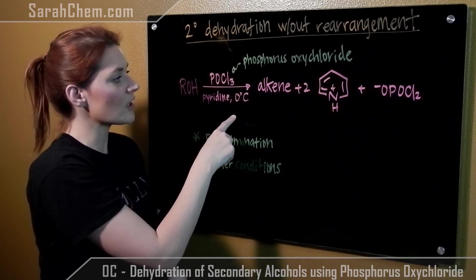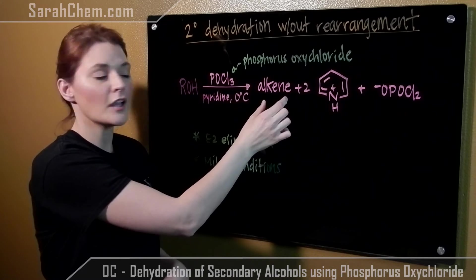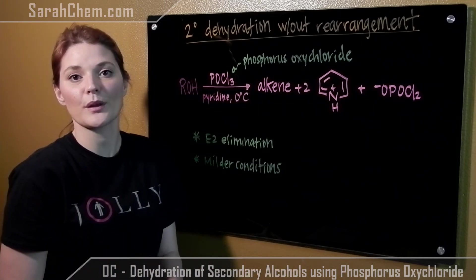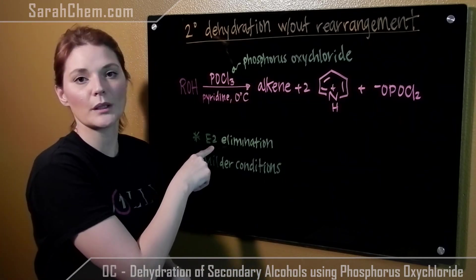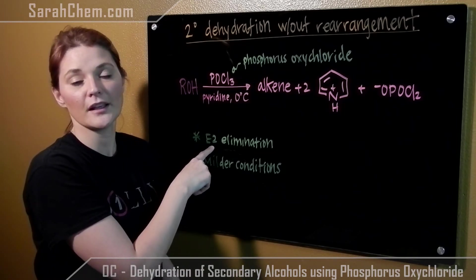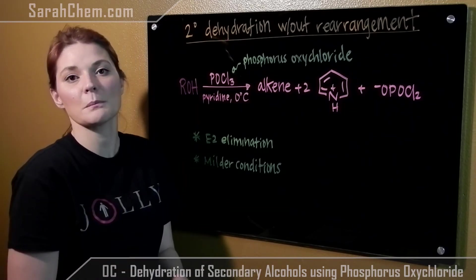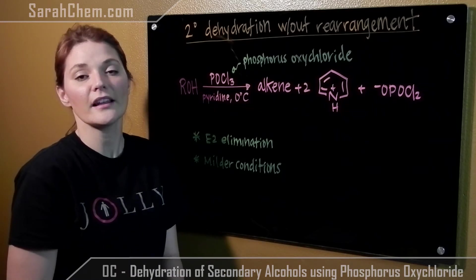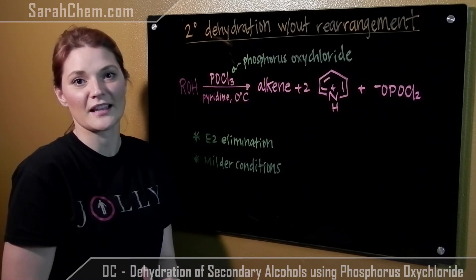When we have this combination here, we can form our alkene. The reason that there is no rearrangement in this reaction is because we'll follow the E2 elimination, which never actually forms a carbocation. Additionally, this is favorable because it's milder conditions than the counterpart, which is sulfuric acid and a lot of heat.